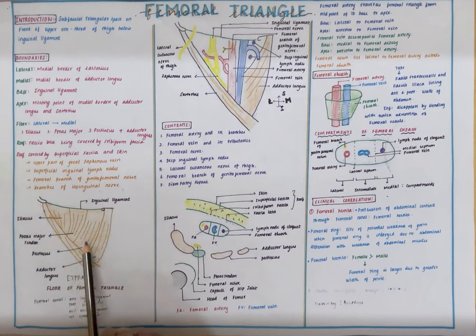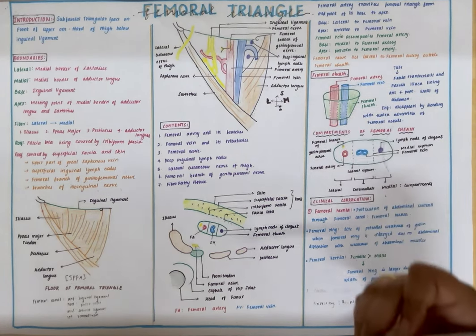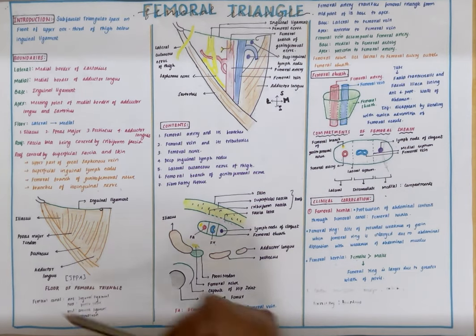Now coming to the floor, it is formed by a group of four muscles: iliacus, psoas major, pectineus, and adductor longus. The point to be noted here - the adductor longus muscle forms the floor as well as the medial border. Now you can remember the four muscles with the mnemonic IPPA.